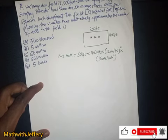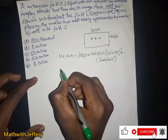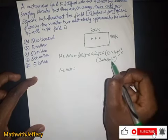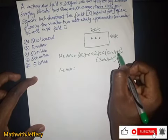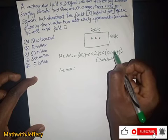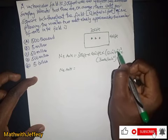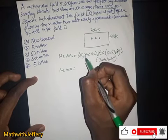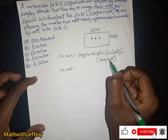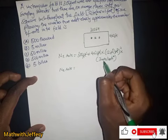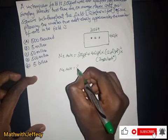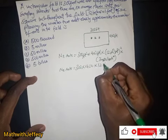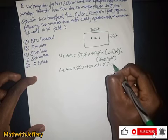Now for the units: the feet squared in the area cancels with the feet squared in the conversion factor, and the inch squared in the conversion cancels with the inch squared in the ant density. We are left with just ants. So we compute 300 times 400 times 12 times 3.